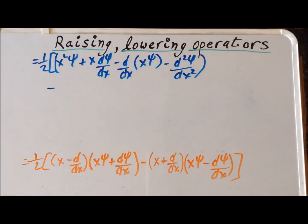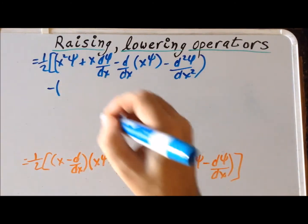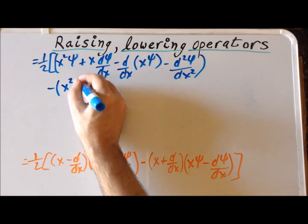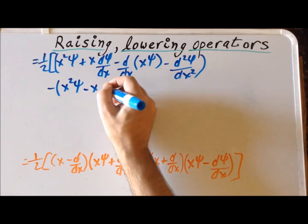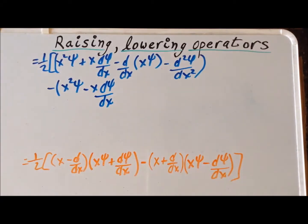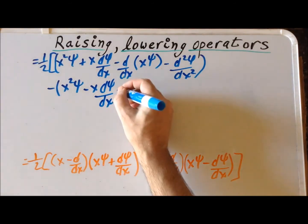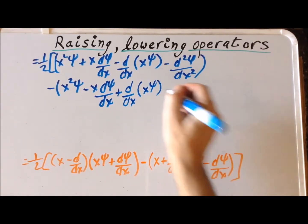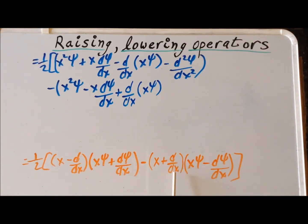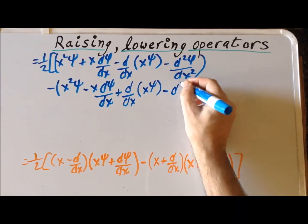Then we subtract the second group. Here x acting on xψ gives x²ψ; x acting on (dψ/dx) gives minus x(dψ/dx); next we take the derivative with respect to x of xψ, so again we have the product rule, giving plus d/dx(xψ); and finally the second derivative of ψ with respect to x.